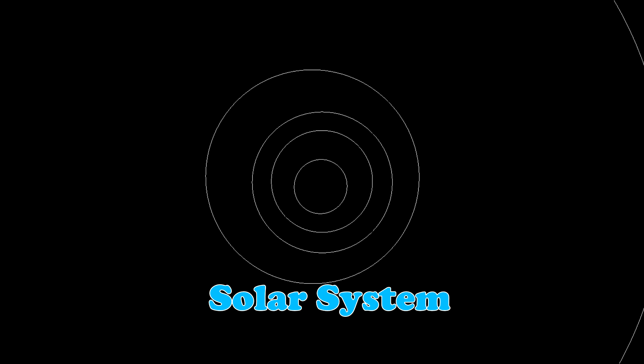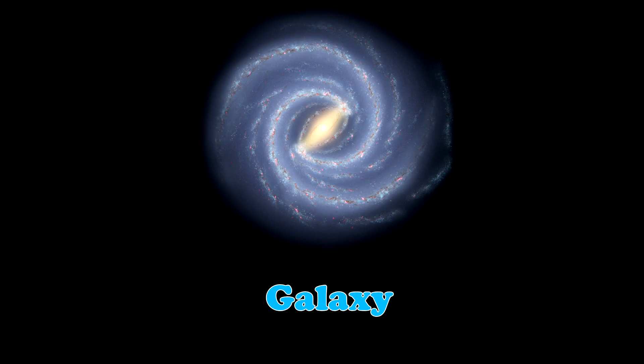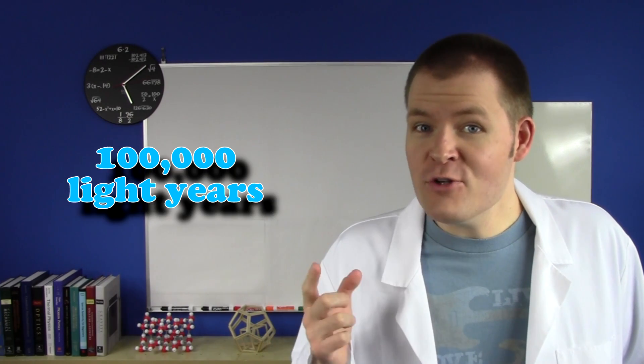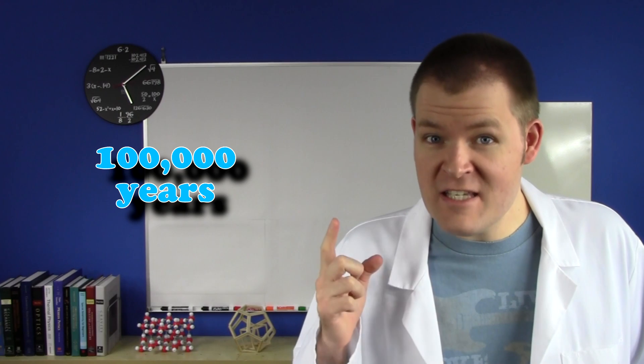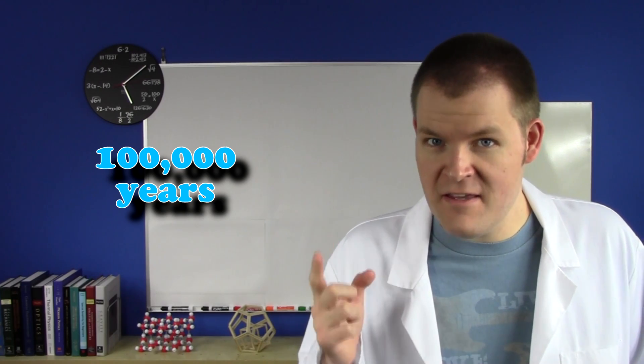Wait for it. Wait for it. Wait for it. Here's the galaxy. These things are really big. Our galaxy, the Milky Way, is about 100,000 light years across. That means it takes light 100,000 years to cross from one side to the other.